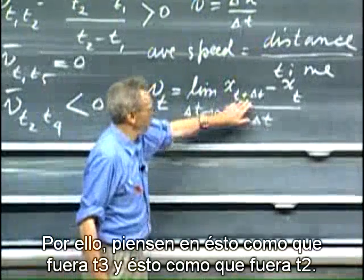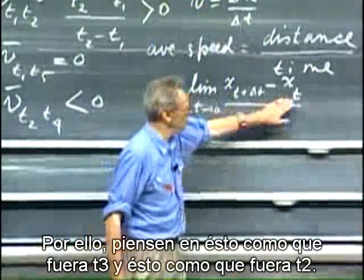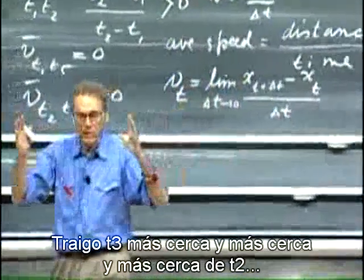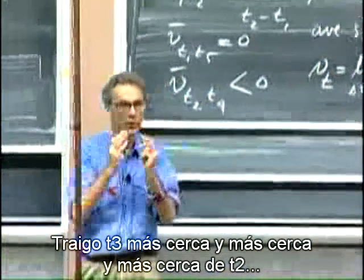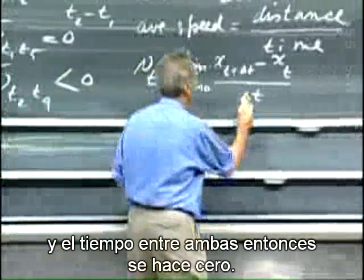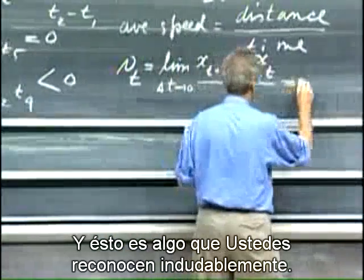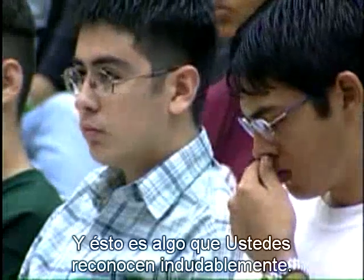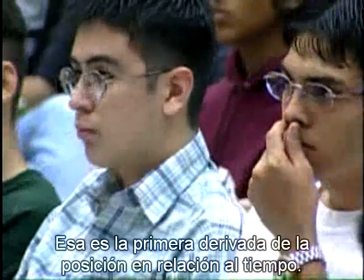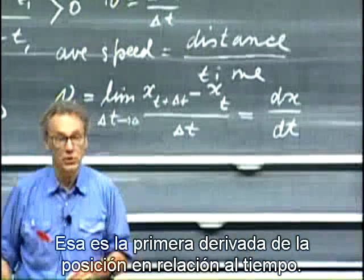So think of this as being t3 and this as t2. I bring t3 closer and closer and closer to t2, and the time between them then goes to zero. And this is something that you undoubtedly recognize. That's the first derivative of the position versus time.